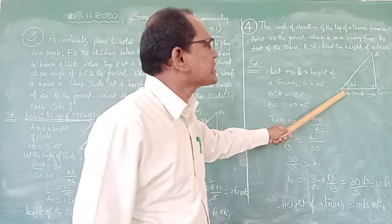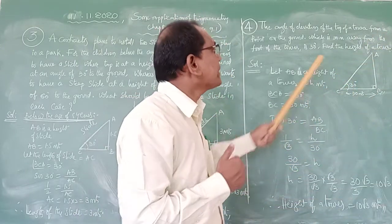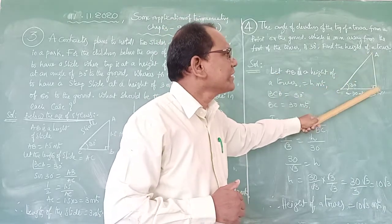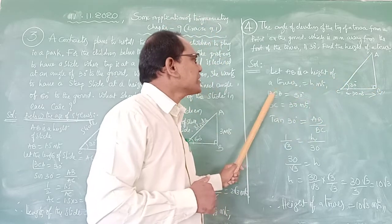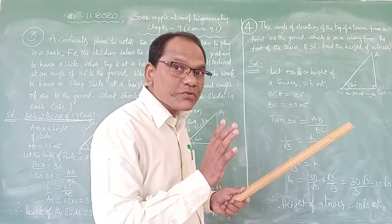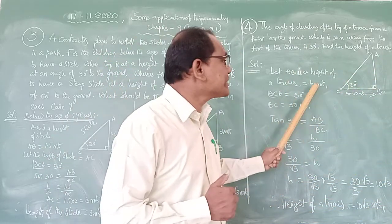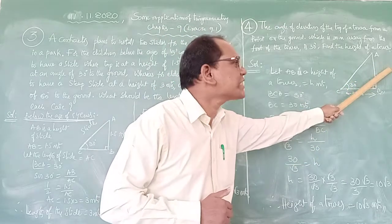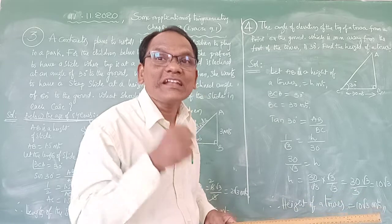We need to find the height of the tower. AB is the height of the tower, let it be h meters. Angle BCA equals 30 degrees and BC equals 30 meters. We have opposite side AB = h and adjacent side BC = 30. Since we have opposite and adjacent, we use the tan ratio. Tan 30 degrees equals opposite side by adjacent side, that is AB by BC, which is h/30.